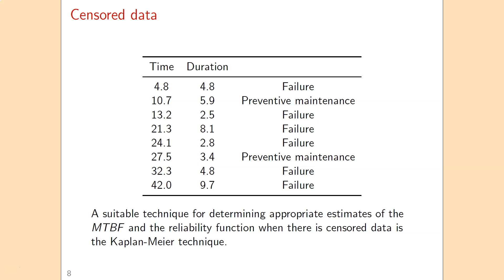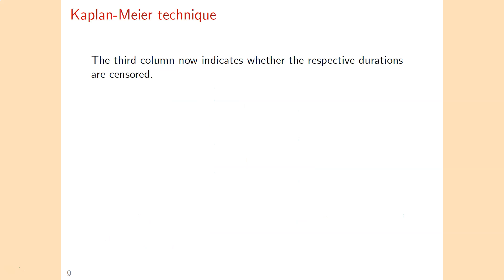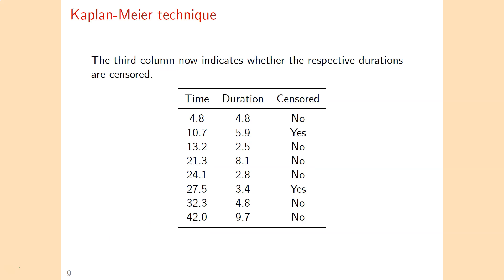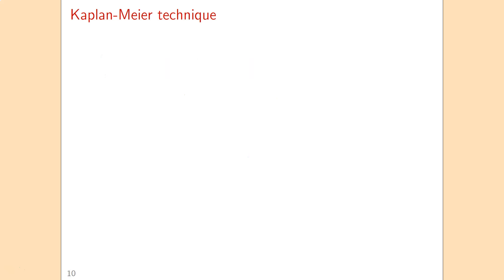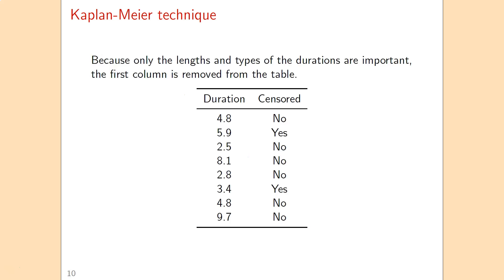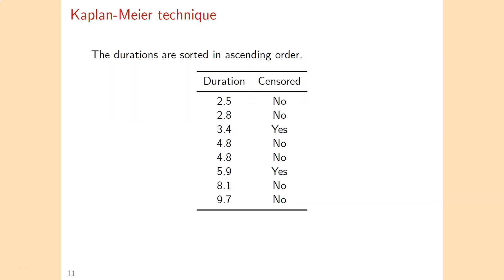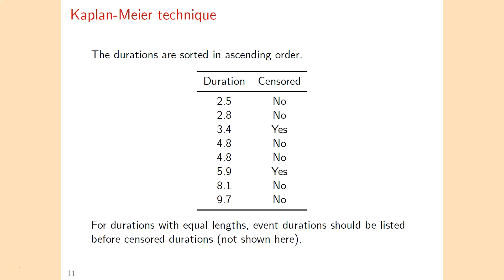The Kaplan-Meier technique is used when we have lifetime data with partly censored durations. First, we replace the column indicating the type of intervention with a column indicating simply whether durations are censored or not. The column of calendar times at which events occur is then removed. Next, we sort the durations in ascending order from smallest to longest. The convention is that if two durations have equal length, event durations should be listed before censored durations.